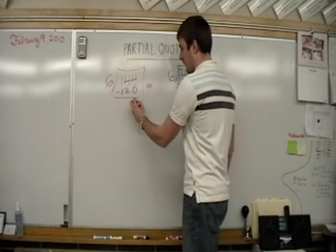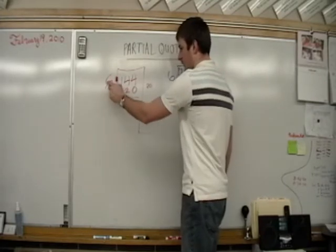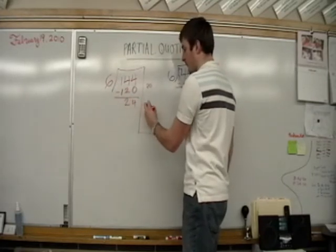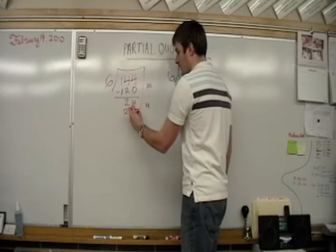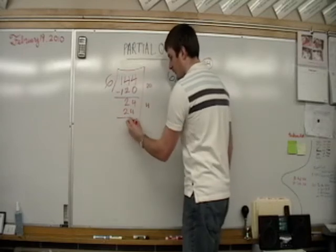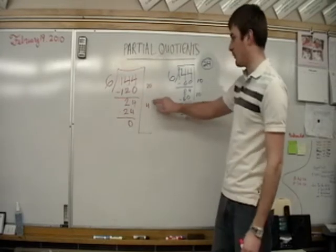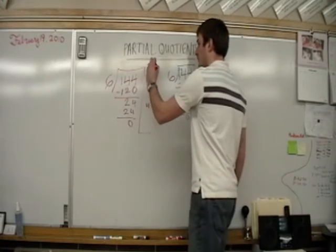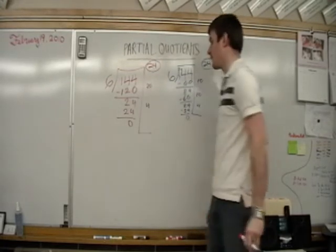We're going to subtract it here. Again, we subtract it. We get 4 and 2. 6 goes into 24 four times, and we are left with 0. Now, our answer 20 and 4 is going to equal 24, and again, we have no remainder.